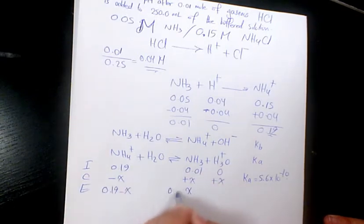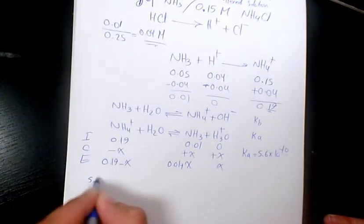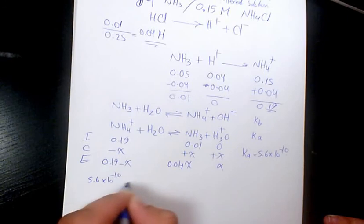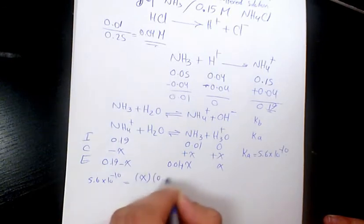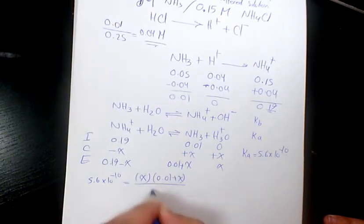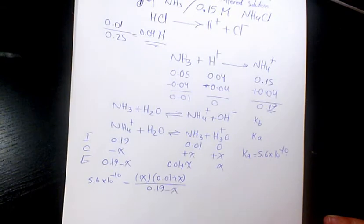So Ka equals 5.6 times 10 to the -10 equals x times (0.01 plus x) divided by (0.19 minus x).